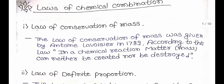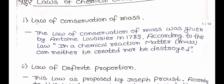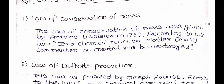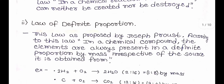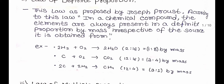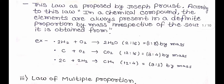The first law is the Law of Conservation of Mass. This law was given by Antoine Lavoisier in 1789. According to this law, in a chemical reaction, matter or mass can neither be created nor be destroyed. The second law of chemical combination is the Law of Definite Proportion. This law was proposed by Joseph Proust. According to this law, in a chemical compound, the elements are always present in a definite proportion by mass.